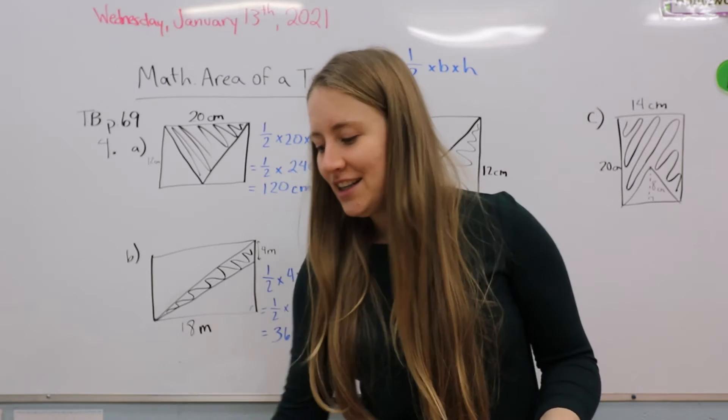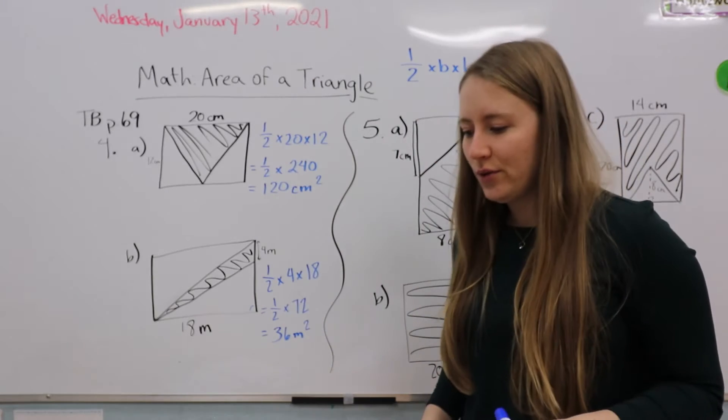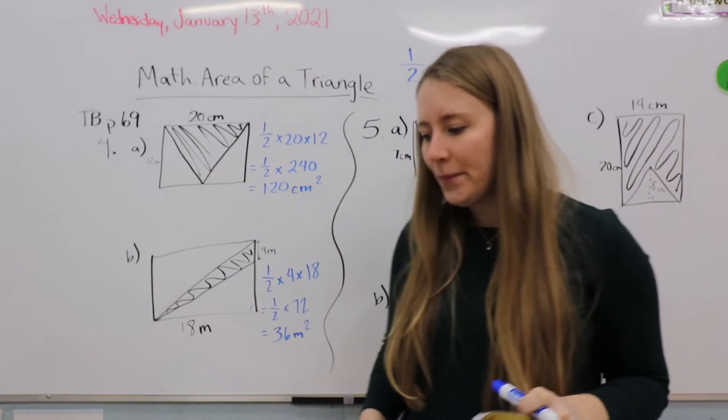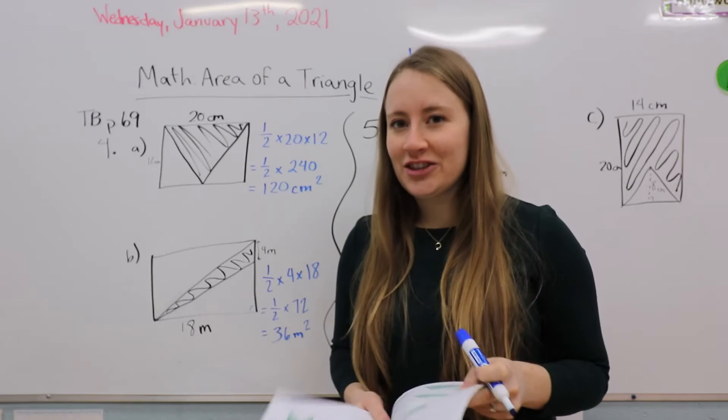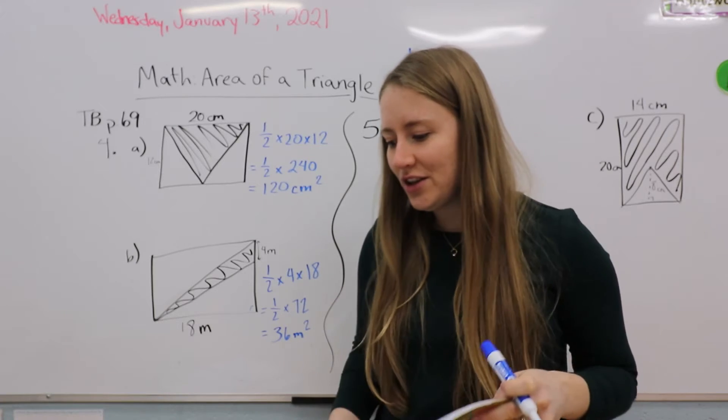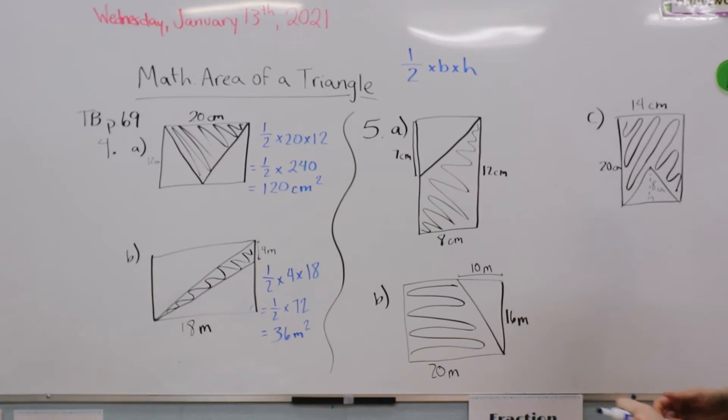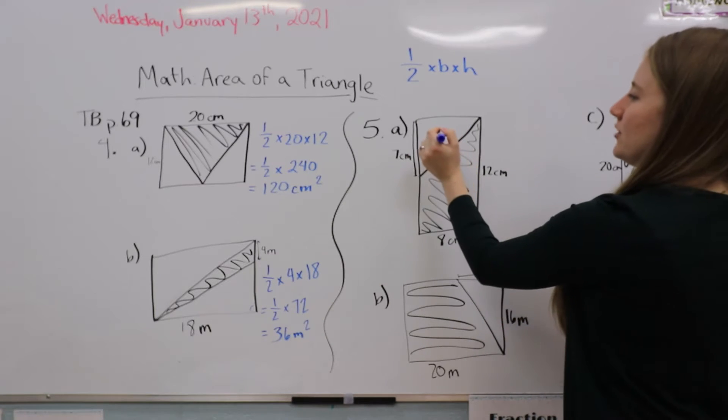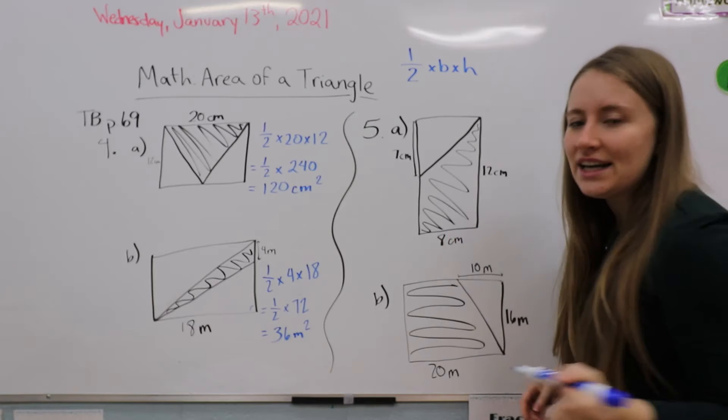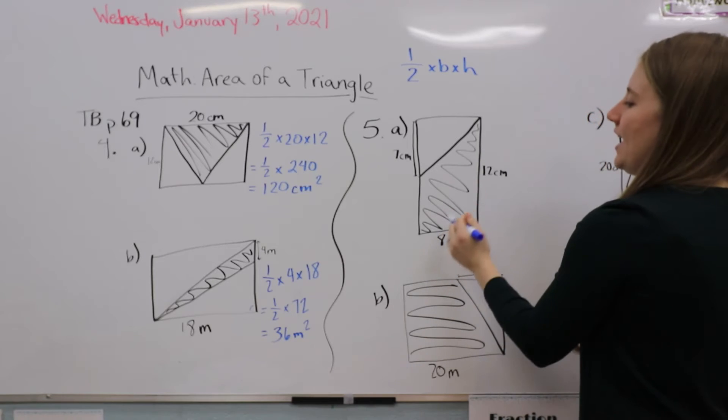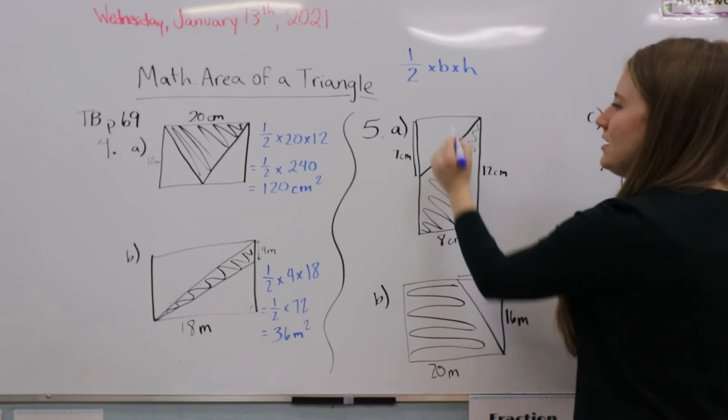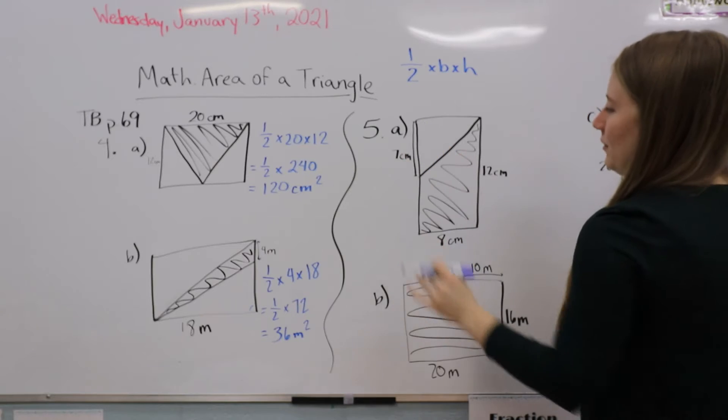So do you see how that works? Question 5 is a little bit different. What you have to do is find both of the areas. We have to find the area of our little triangle, but because it's asking for the shaded area and the shaded area is the rectangle minus the triangle, that means we have to find both.